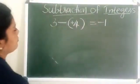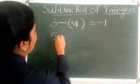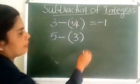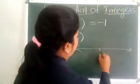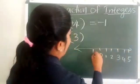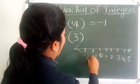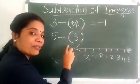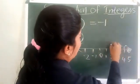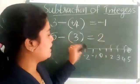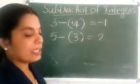Consider another example: 5 minus 3. Draw a number line marking 0, 1, 2, 3, 4, 5 and minus 1, minus 2. Starting from 5, move 3 steps to the left: 1, 2, 3. We get 2. That is, to subtract a positive integer, we move to the left on the number line.